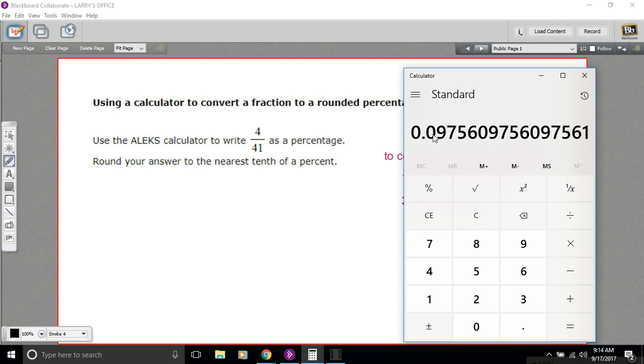You know, multiplying by 100 is the same as moving the decimal point two places. So if you want to do that shortcut, you can. Or you can just type in times 100. Either way, you'll get 9.7, etc., etc.